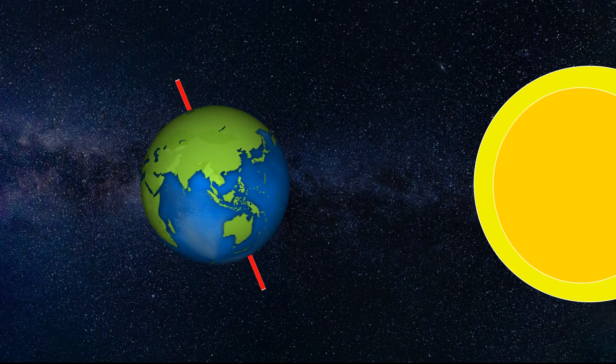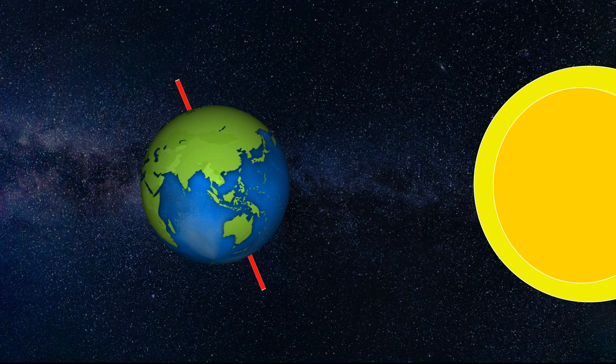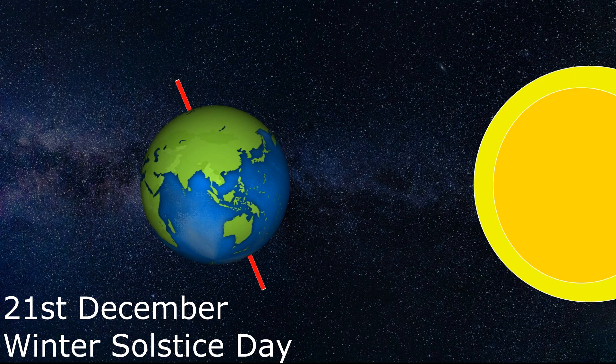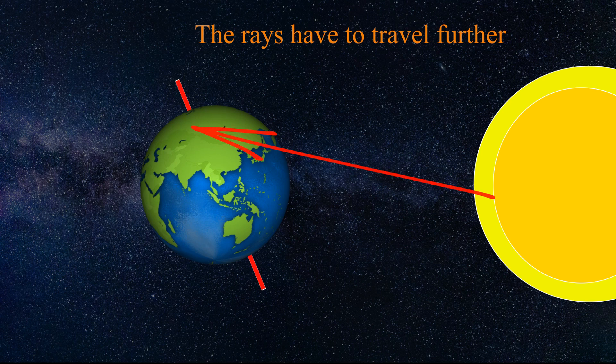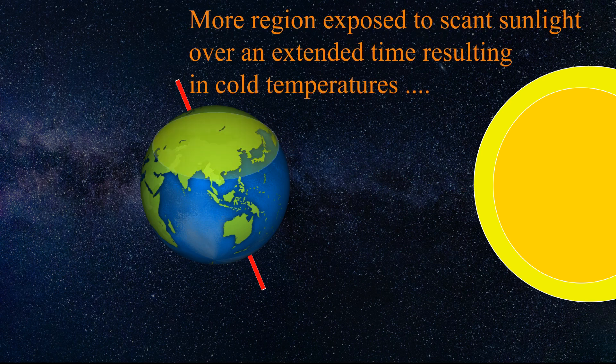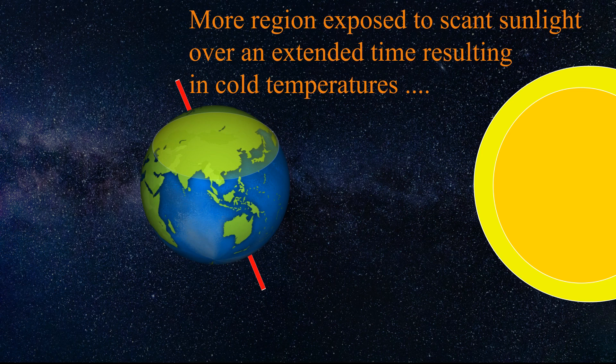In the period from September to March, the North Pole is pointing away from the sun, at its furthest on 21st December, the winter solstice day. Therefore, less light is hitting the northern part of the earth each day around that time, resulting in cold winter.